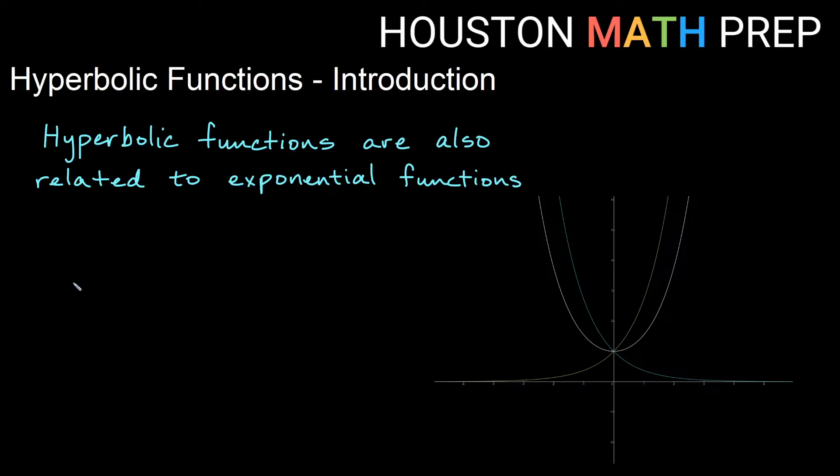So we get a definition for cosh, hyperbolic cosine of x, being the average of these two things. So I add exponential growth and exponential decay, and I divide them by two. And this is our exponential definition for hyperbolic cosine of x, for cosh of x.